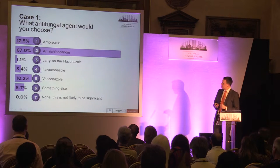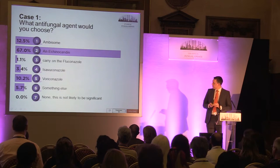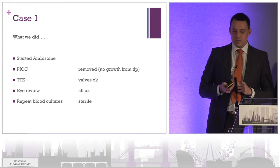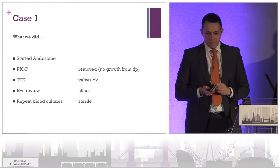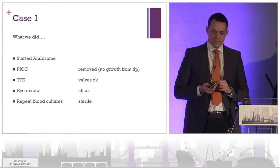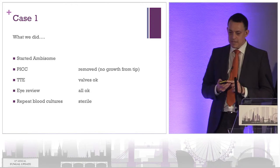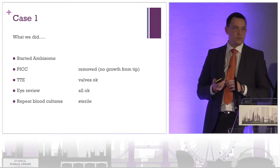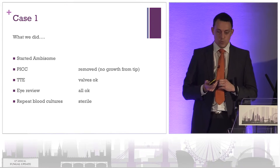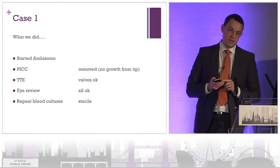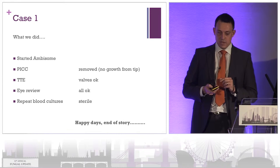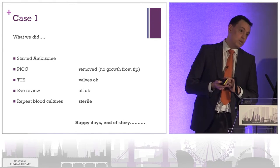Most people would switch him to an echinocandin. Some would switch to AmBisome. We switched him to AmBisome, partly because he still had fevers and we weren't really sure what was going on. We did remove his PICC, though interestingly, as is fairly typical, we grew nothing from his PICC tip. We didn't echo his valves, which was normal. We asked the eye team to look in the back of his eyes — all normal — and repeated his blood cultures, which were all sterile.